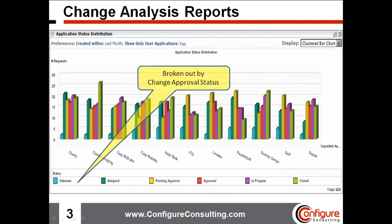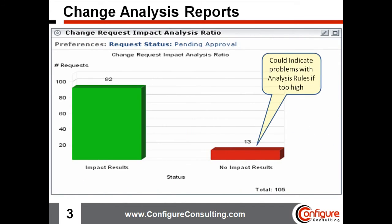Another change analysis report is Application Status, which provides similar information but also enables management to identify problem areas like applications where obtaining approval is taking too long, changes getting approved but not getting closed, and several other useful statistics in one simple graphical report. The last change analysis report provides impact analysis ratio statistics, enabling change managers to recognize increasing numbers of changes for which no impact analysis results exist — usually indicating the CMDB team needs to modify or create additional impact analysis rules.